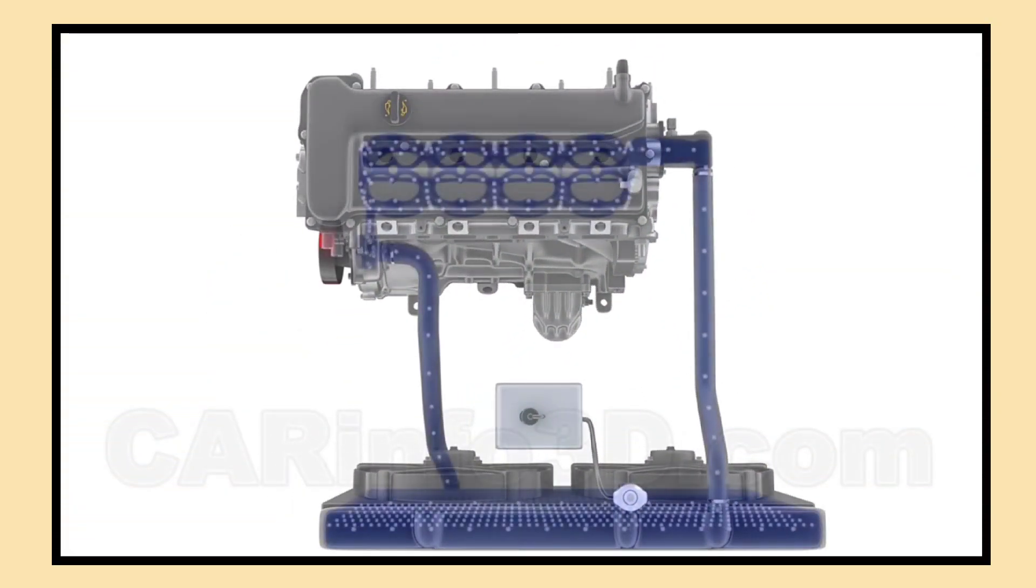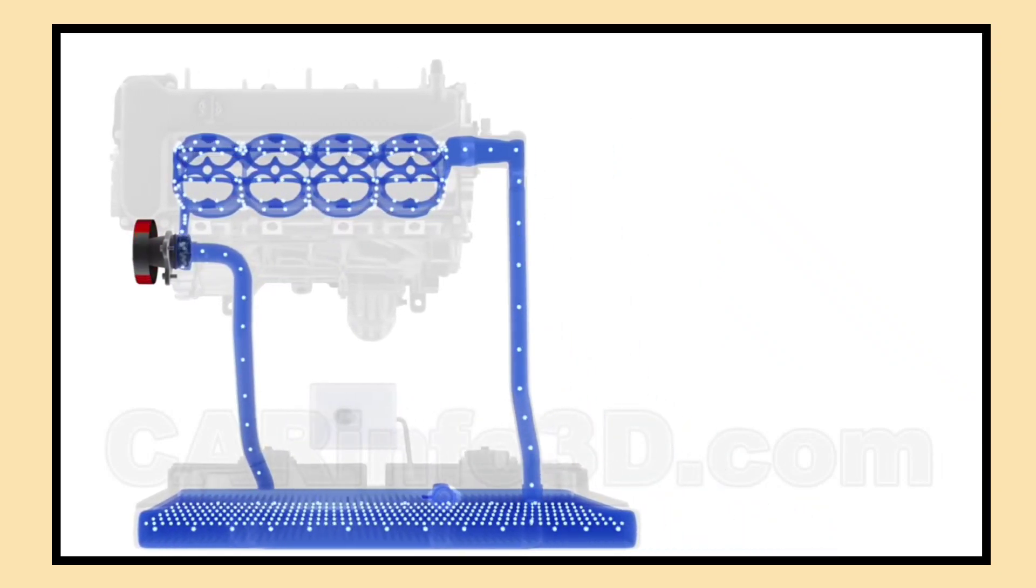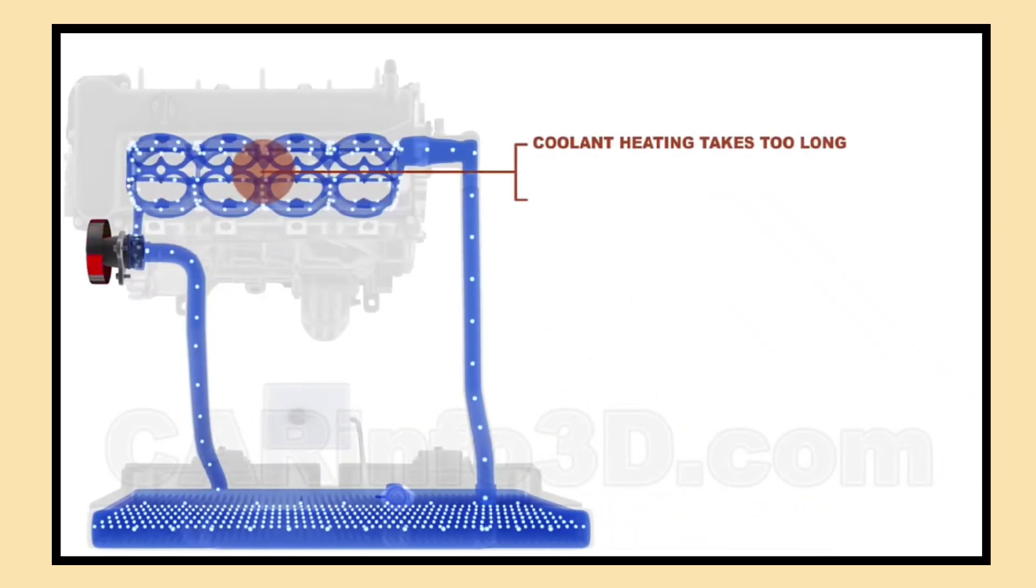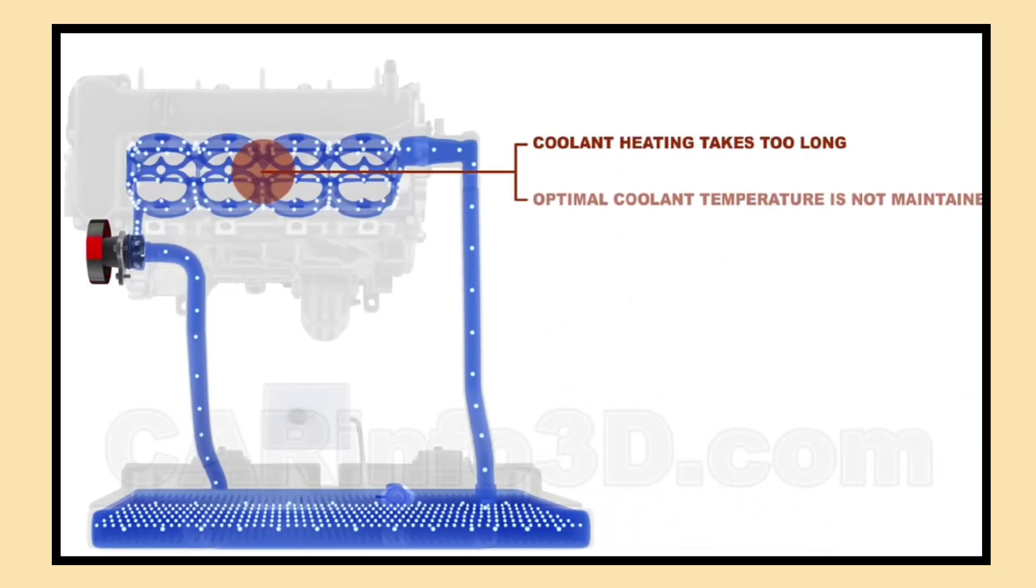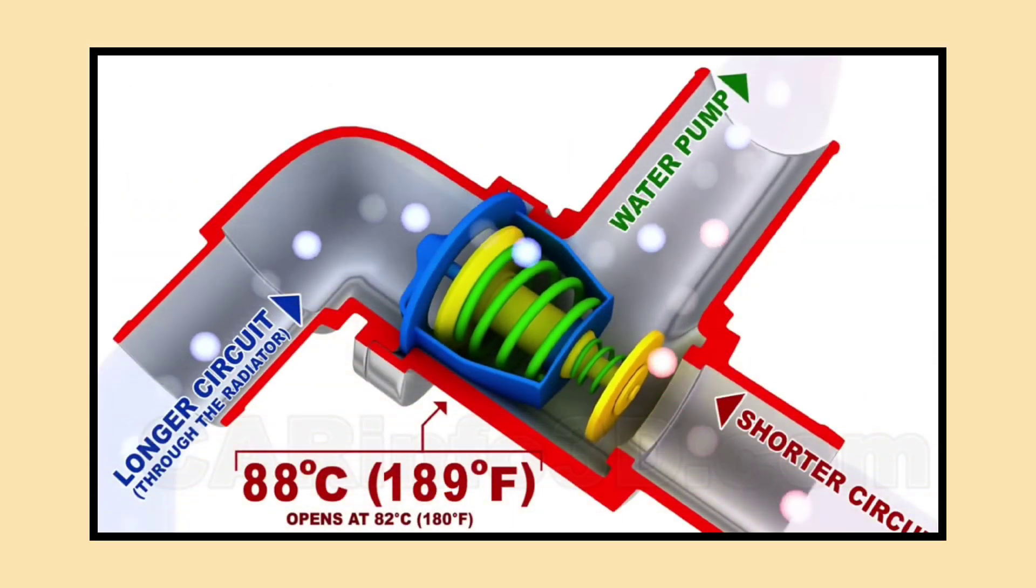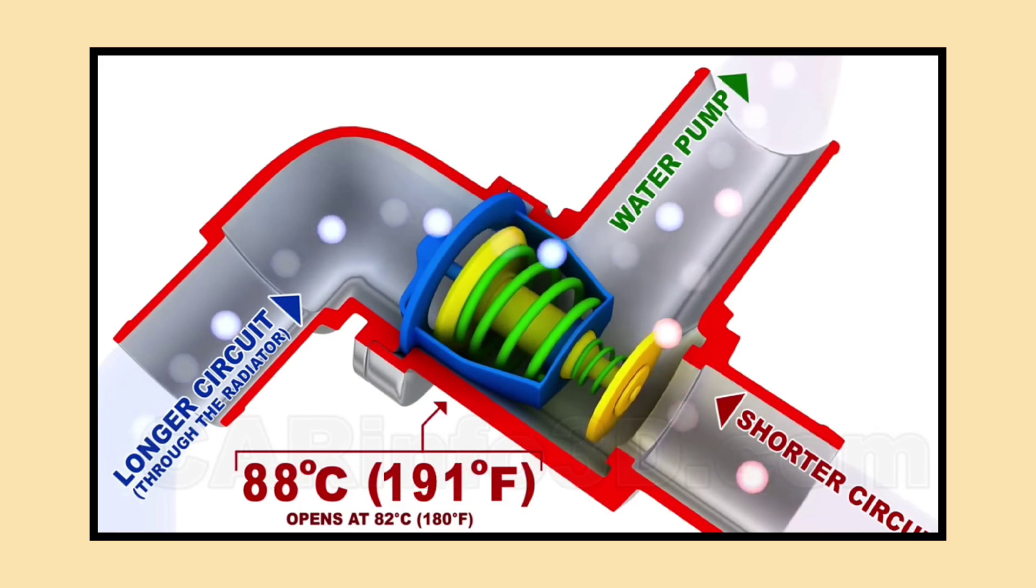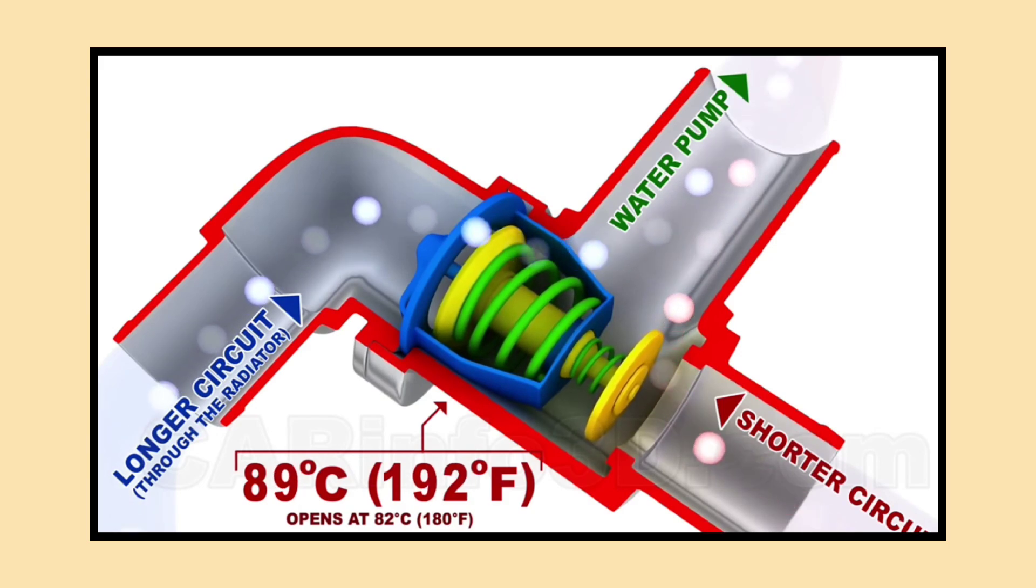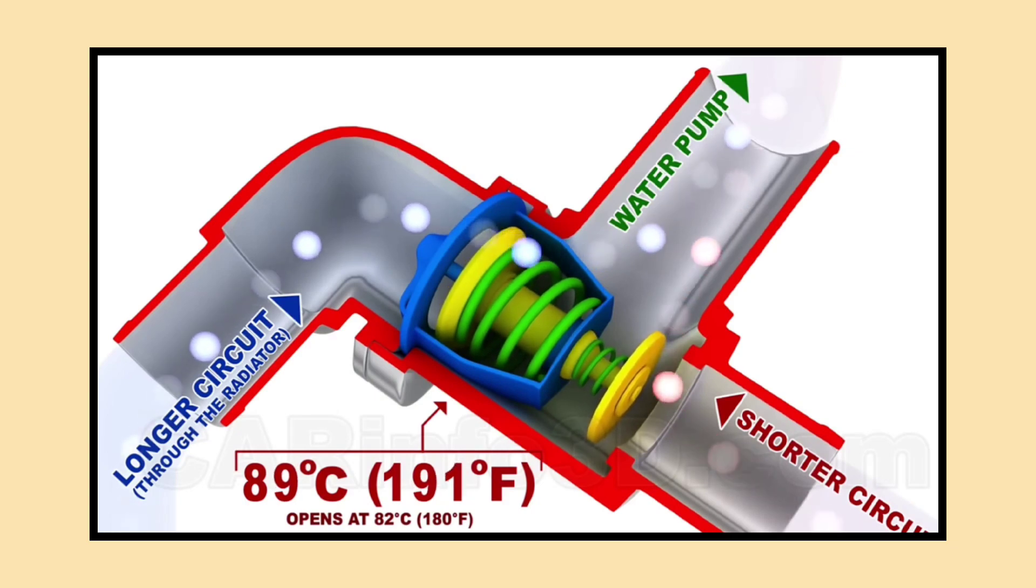When the heated coolant enters the radiator, it flows through the tubes. As air moves through the radiator, either from driving or an electric fan, heat is transferred from the hot coolant to the cooler air. This cooling process can lower the coolant temperature significantly, sometimes by as much as 50°F before it exits the radiator, ensuring that the engine doesn't overheat.